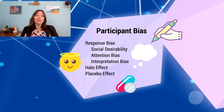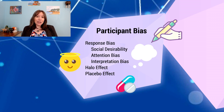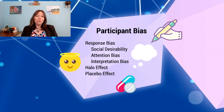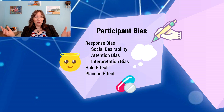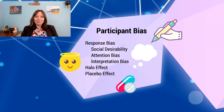We want to ensure that the true independent variable is having an effect, not just the placebo. In most cases with the brownies, we would not tell people whether they have cannabis or not, and we would also try to make sure participants are not aware of what we're trying to study.